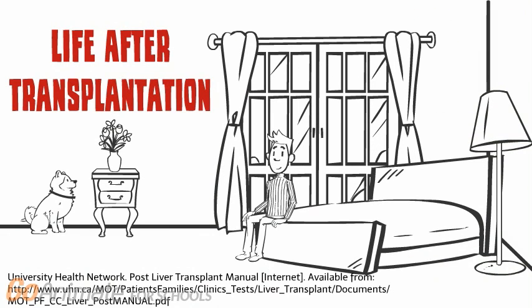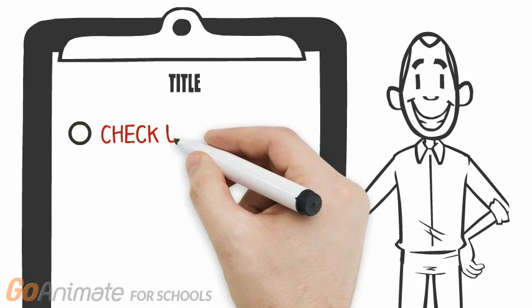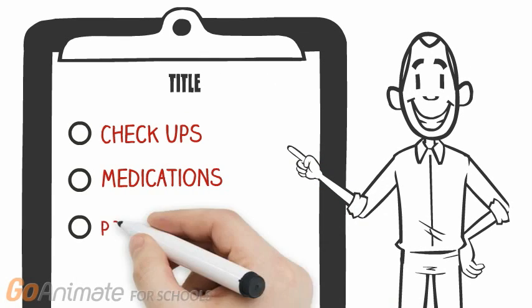Now let's talk about life post-transplantation. Organ transplantation recipients follow a regimen to ensure that life with their new organ will go as smoothly as possible. We'll look at four post-operative aspects including checkups, medications, possible complications, and lifestyle changes.